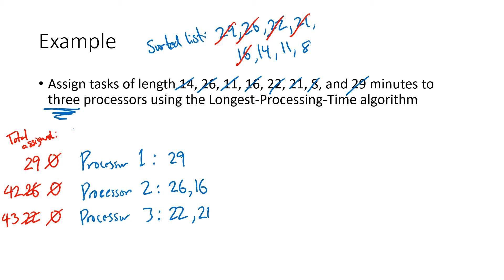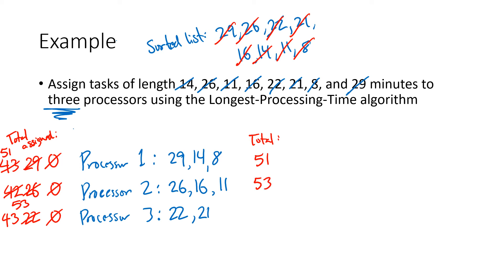Next is 14. Processor one has 29 — the least — so the 14 goes there. 29 + 14 = 43. Next is 11. Processor two has 42, slightly less than the others' 43, so the 11 goes to processor two. 42 + 11 = 53. Finally, there's a task of length 8. Processors one and three are tied at 43, so the 8 goes to processor one. 43 + 8 = 51. The final totals are: processor one = 51, processor two = 53, processor three = 43.